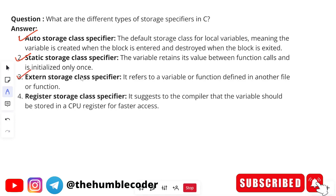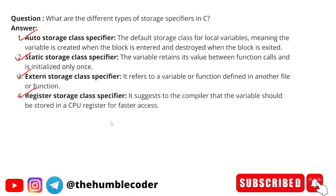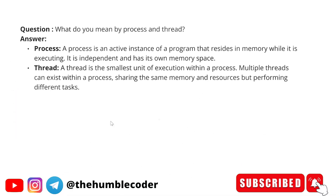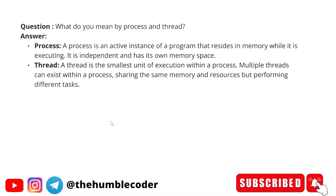Next is the external storage class specifier — it refers to a variable or function defined in another file or function. Next is the register storage class specifier — it suggests to the compiler that the variable should be stored in a CPU register for faster access.